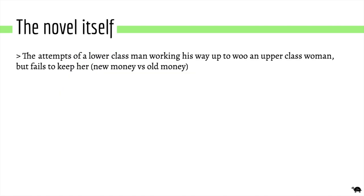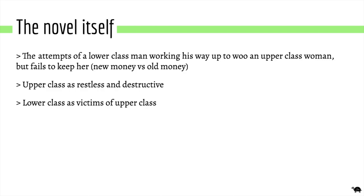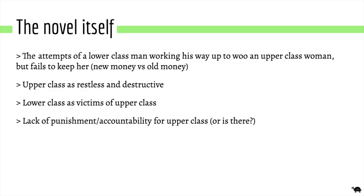A quick overview of how class and wealth is presented in the novel: the plot revolves around how a lower class man, Gatsby, tries to woo an upper class woman but fails to keep her as his wealth is not from reputable sources. Fitzgerald references the upper class as restless and destructive, the lower class as victims of the upper class, and there is a lack of physical accountability for the upper class. Both classes seem trapped in some way.